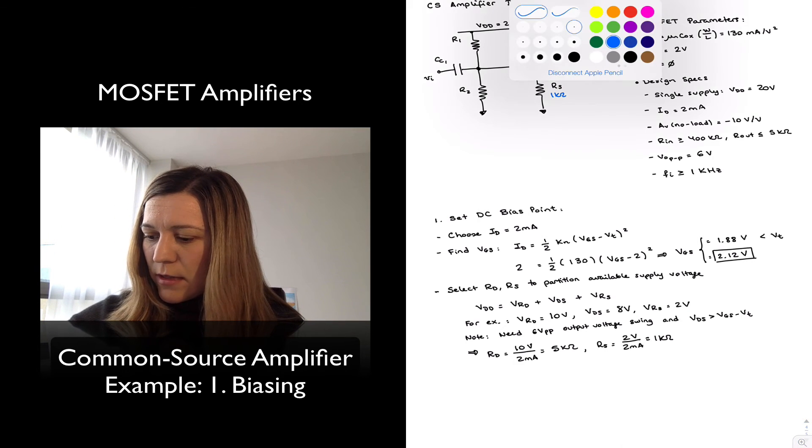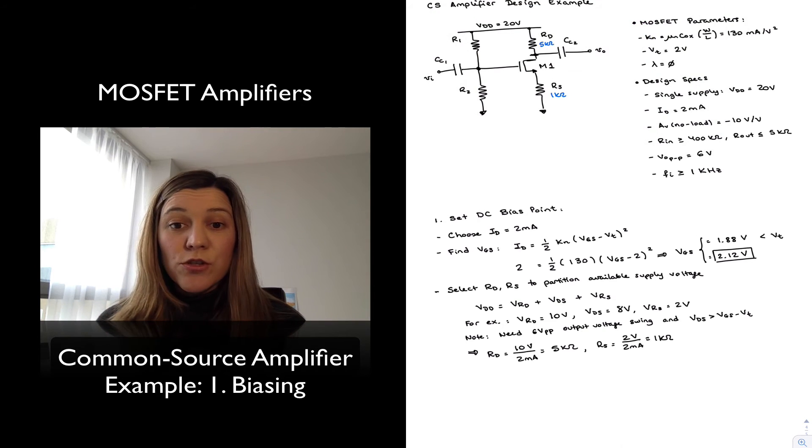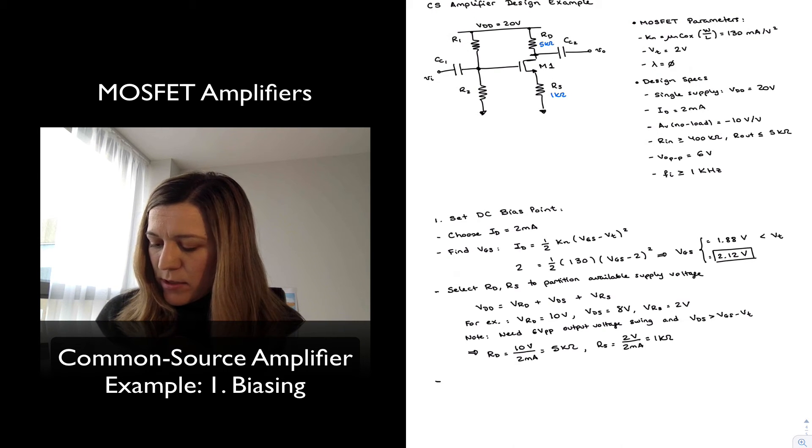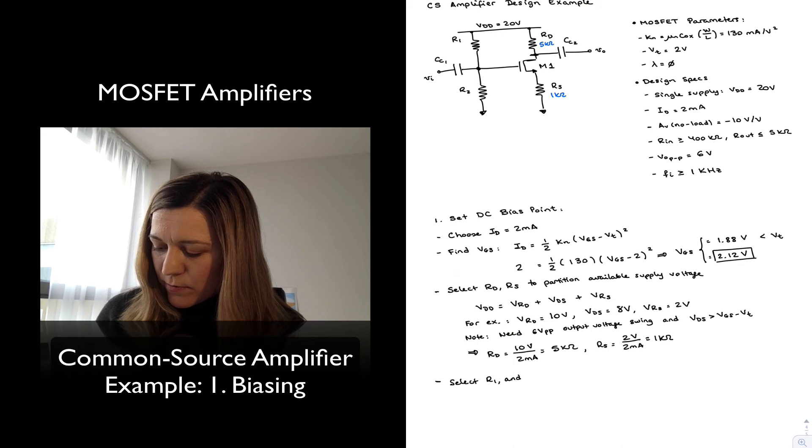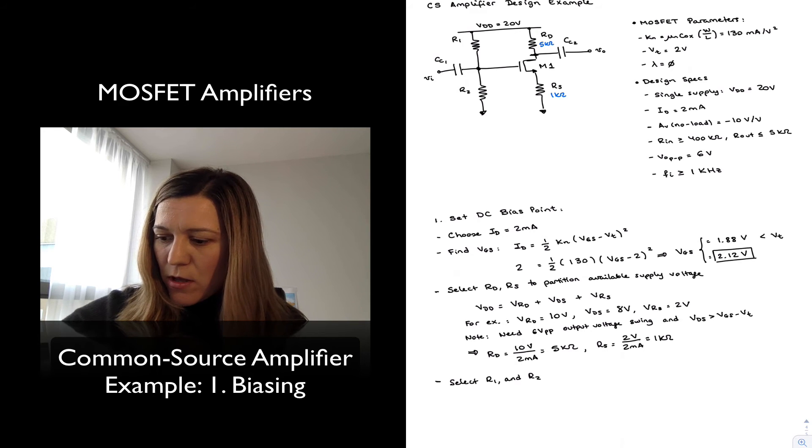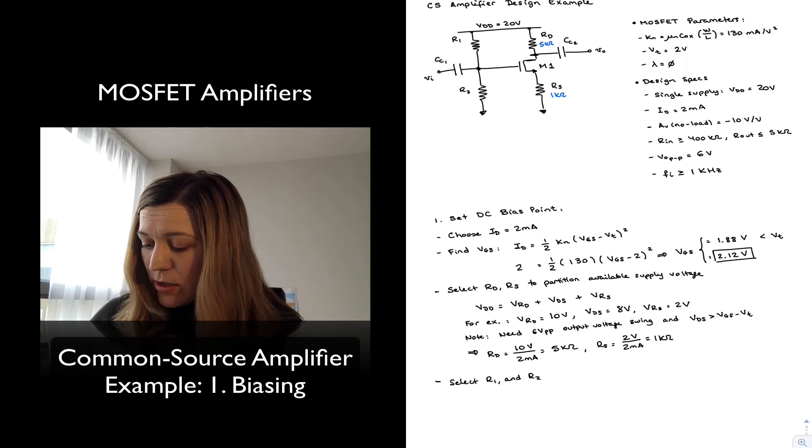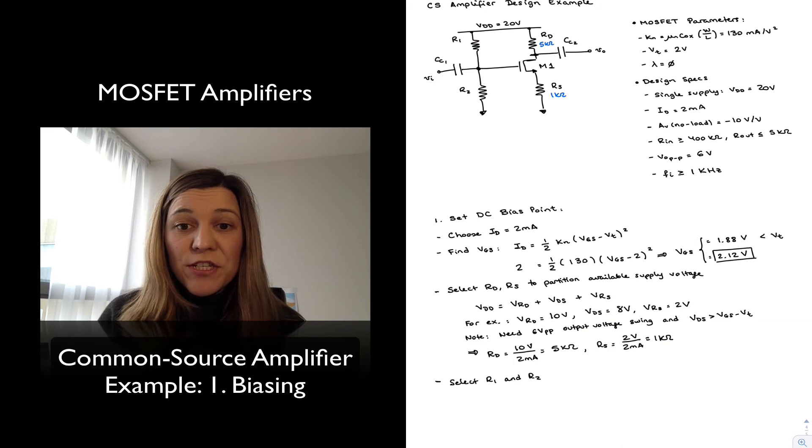I can enter those values: 5 kilo-ohms for RD and 1 kilo-ohm for RS. Then the last step in order to set my DC bias point is going to be the selection of resistors R1 and R2.